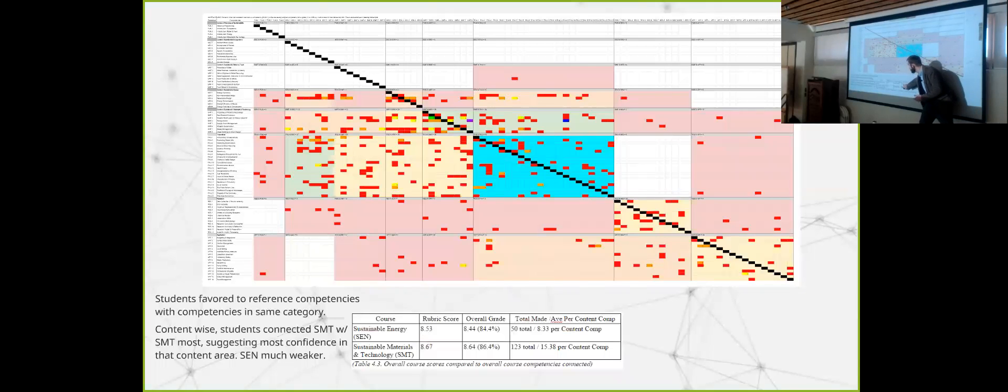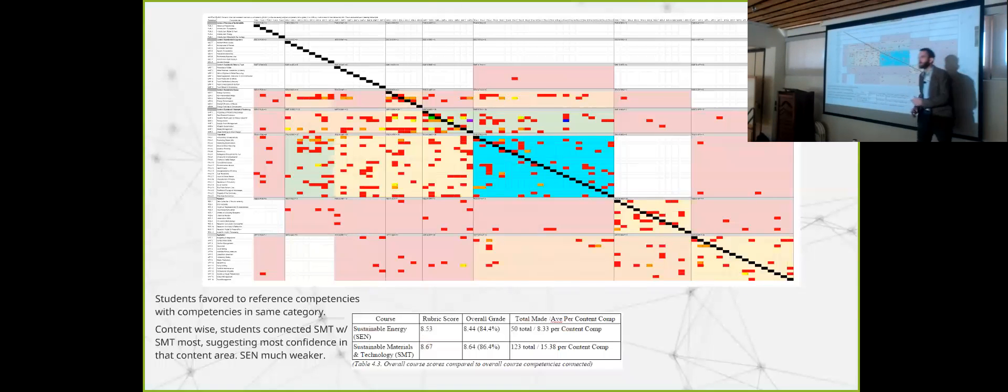Here's the grades here. That's energy and materials technology. And you can see the difference in grades. But look at here, the connections. 50 total connections were made in energy. 123. That comes out to, for each content competency and energy, only 8.33 connections were made, whereas 15.38 connections were made. That heightened level of relationship connectivity within the student's understanding shows me I did a really good job. Kids were really moving with the content and materials and technology, and I have to go back and revisit my energy course. And so that tells me a lot of feedback information.